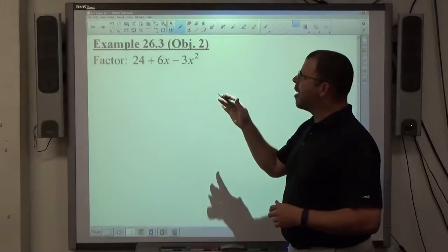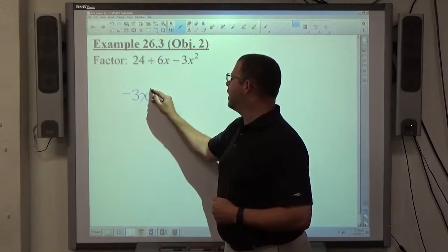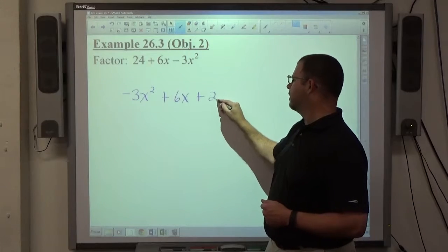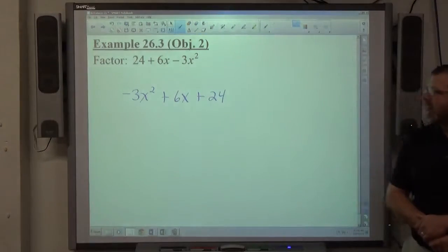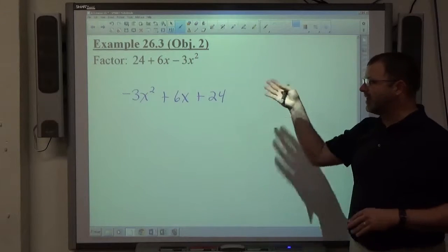Again, the first thing I would do on my paper, if I see this in my book, is I would transfer it to my paper in descending order: quadratic term followed by linear term followed by constant. The -3x² is negative, the 6x is positive, the 24 is positive, so the structure of mine is in different order, but it's the exact same expression.